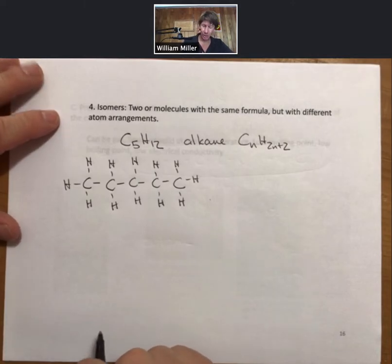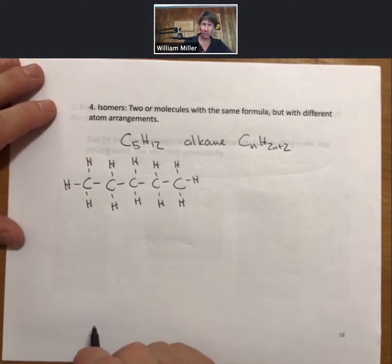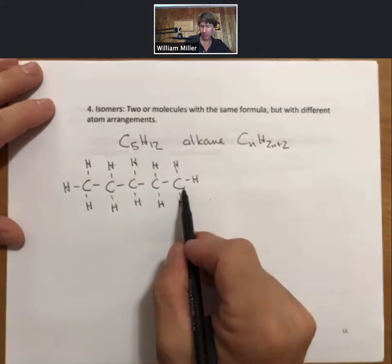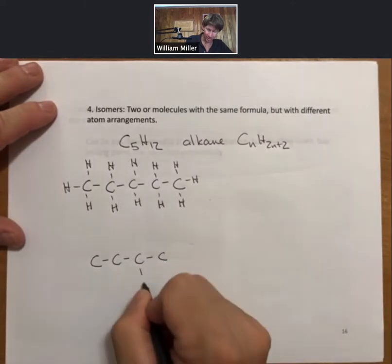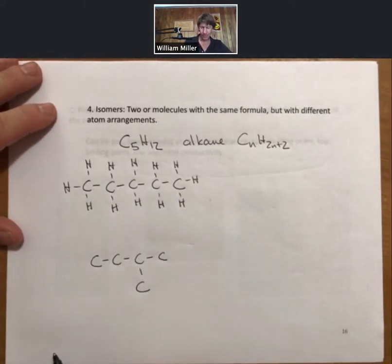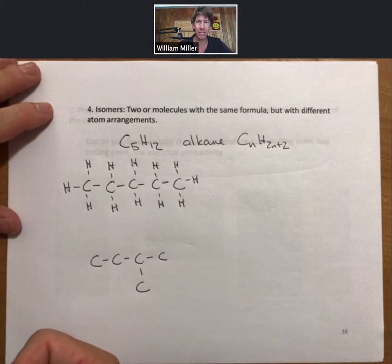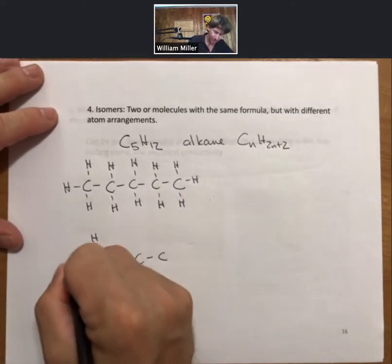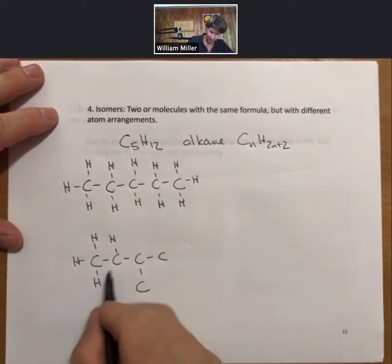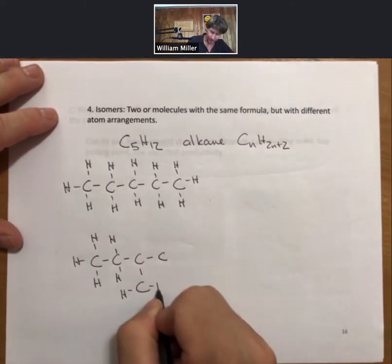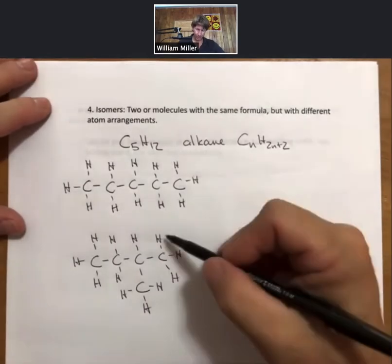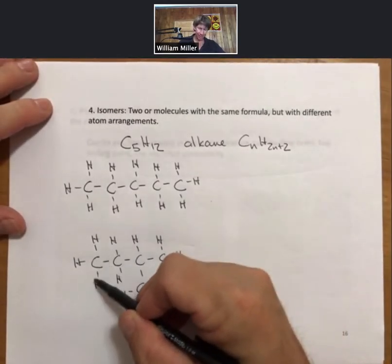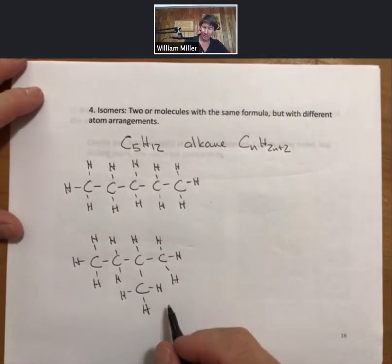When you make other isomers, what you're going to want to do is you're going to want to take the carbon off of the end and stick it back in the middle to form one of those methyl branches. And then, again, if you fill in all of the carbons with hydrogens until each of the carbons has four bonds, we can show 1, 2, 3, 4, 5, 6, 7, 8, 9, 10, 11, 12. This is a second isomer.